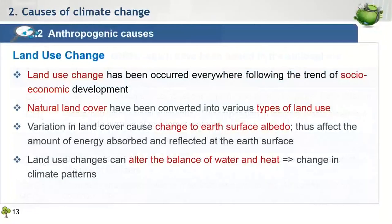The other human activity that causes change to the climate system is land use change. Land use change has been occurring everywhere following the trend of socioeconomic development of human society. The existing natural land cover has been altered or converted into various types of land use to fulfill development requirements. For example, most of the forest land was converted into agricultural fields, which may then be converted into residential zones, urban settlements, or industrial compounds. This activity has led to change in the land cover pattern and variation in the earth's surface albedo, which affects the amount of energy absorbed and reflected by the earth, in turn causing change to heat flow and influencing regional and global climate.